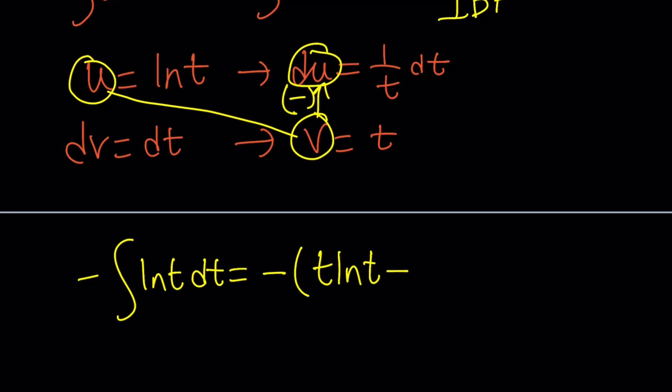minus the integral of VDU, which is t times 1 over t times dt. Awesome. The negative must stay on the outside. So I'm going to close the parentheses, cancel out the t's, and that gives us the following.